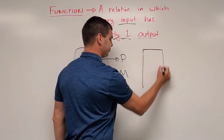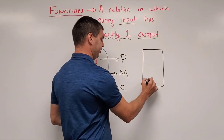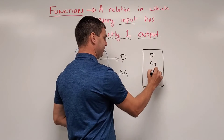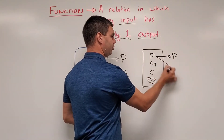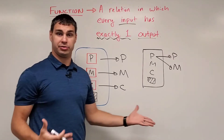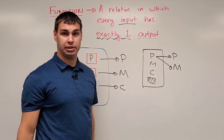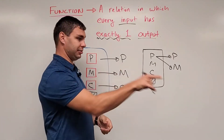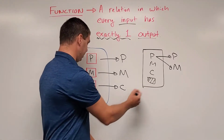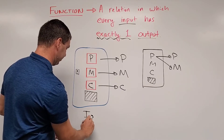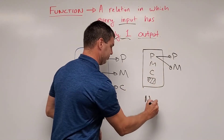Now here's an example of a machine that would not be a function. You have Pepsi, Mountain Dew, and Wild Cherry Pepsi again, but this time when you hit the Pepsi button, you're not sure if you're going to get a Pepsi or a Mountain Dew. It's not a function because for that input, you're not getting exactly one output — you're getting two. Maybe you hit the Pepsi button and get a Pepsi, the person behind you hits it and gets a Mountain Dew. That's a bad machine — that's not a function.